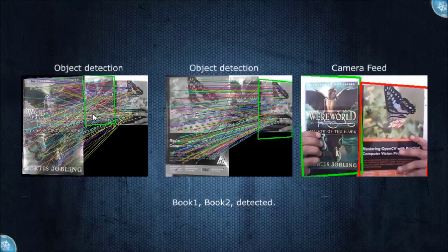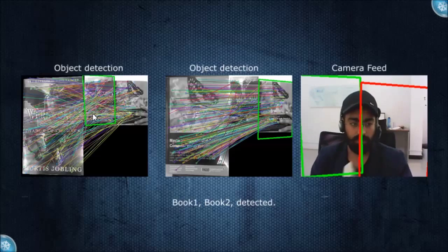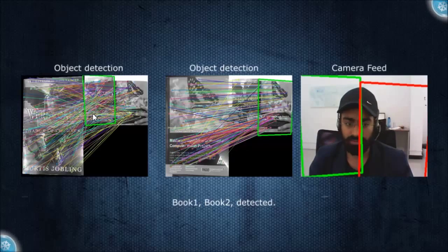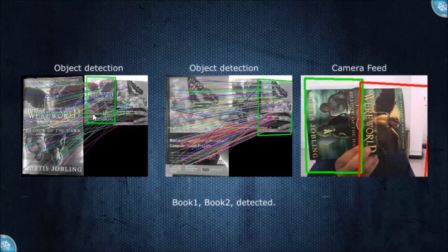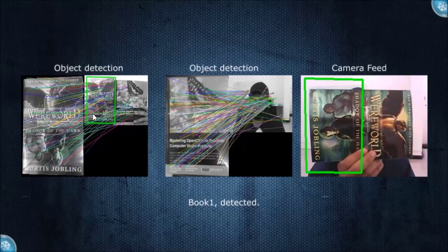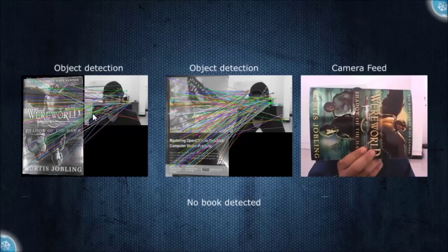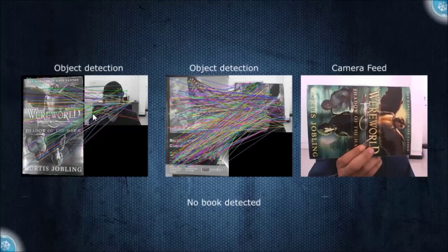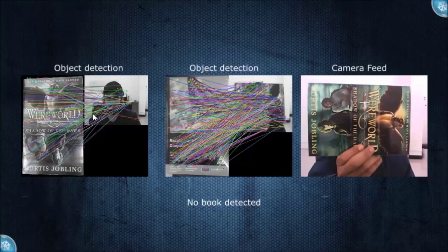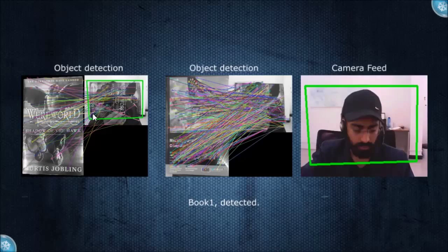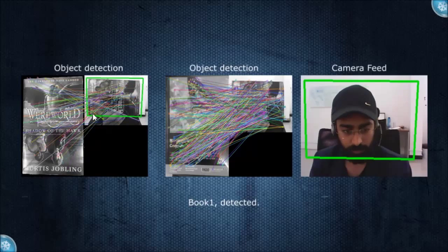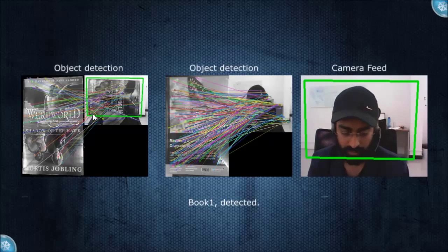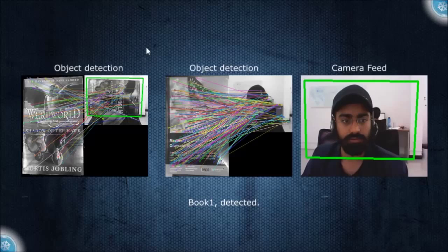In this frame both objects are detected. Basically the algorithm is rotation invariant, so even if you rotate the object it's still going to be detected. It was a fun hack day and I learned a lot about OpenCV — basically how to get feature points and how to get things done with it. Thanks for watching.